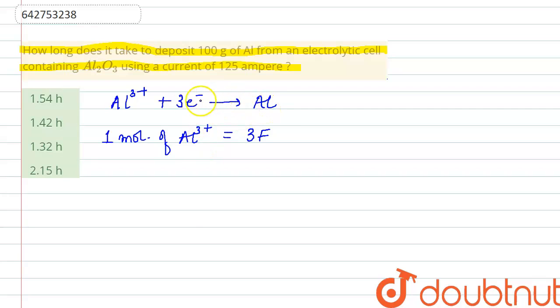But in the given question, the mass of aluminum deposited is equal to 100 grams. So if we convert it to moles of aluminum, it will be equal to 100 divided by 27 moles.